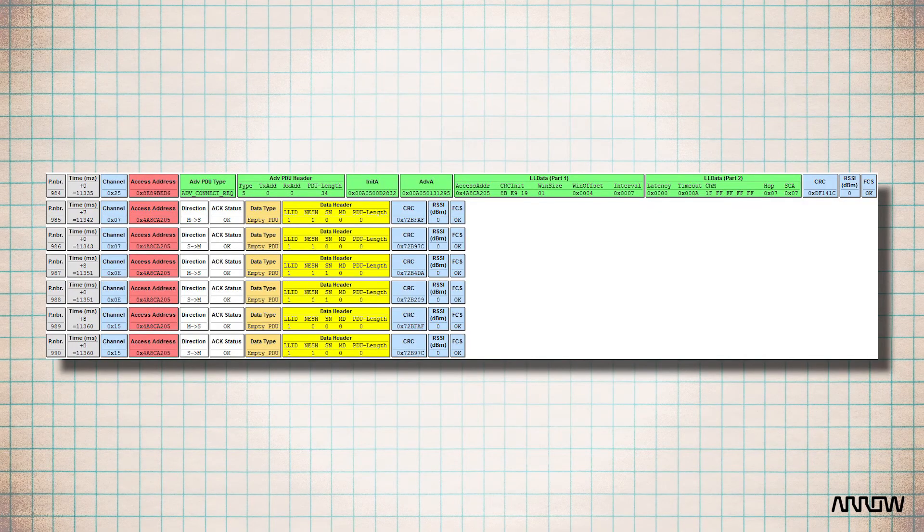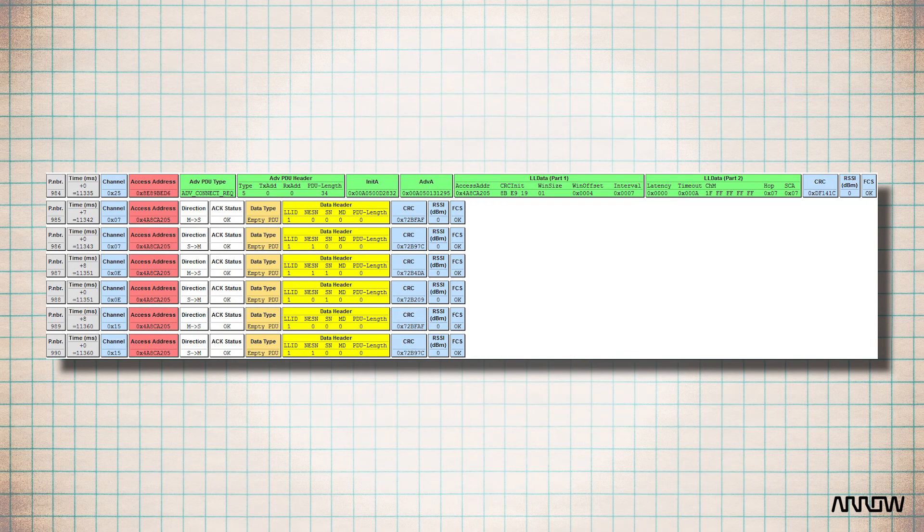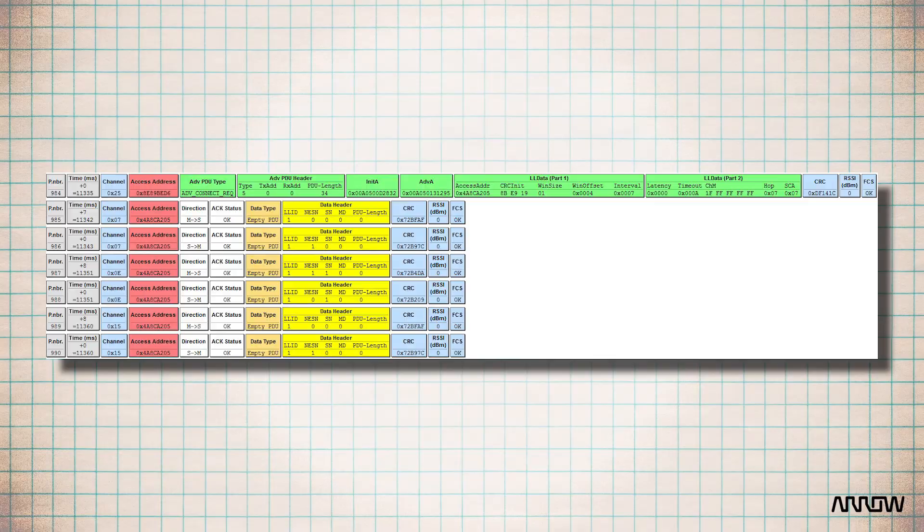Finally, notice the access address in a data packet. Unlike an advertising packet with a fixed access address, the data packet has an address determined during the connection request. This access address is random and should be unique. Around two billion addresses are available, so the probability of collision is very low.